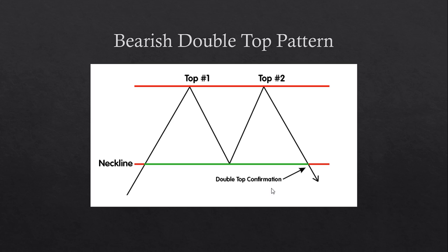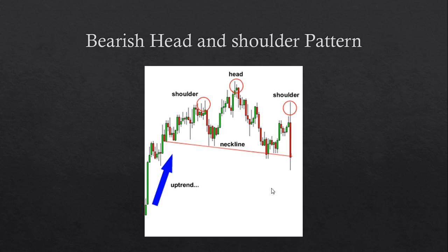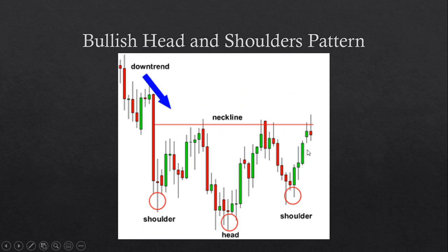Now we have the bearish head and shoulders pattern. This pattern is used from an uptrend to reverse into a downtrend. We have a left shoulder, a head, and a right shoulder, with a neckline. When the candlestick breaks below the neckline, we have confirmation that we'll be going into a downtrend.